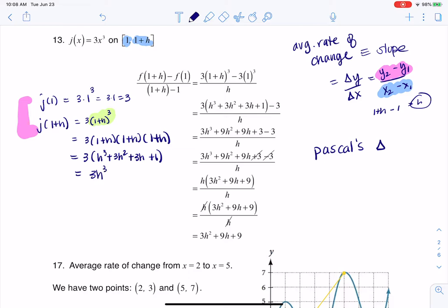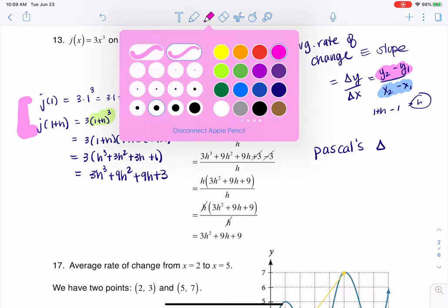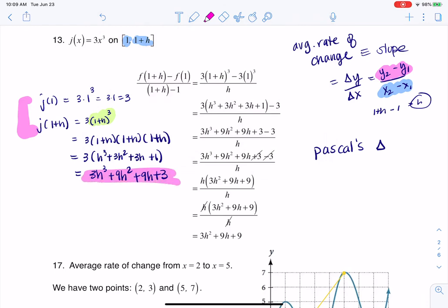And then I'm going to distribute the 3, so I'm going to get 3h cubed plus 9h squared plus 9h plus 3. And ultimately, keep in mind, I want to subtract these y values, so I want to take this y value and I want to subtract from it that y value, and those two things are going to go into the numerator of my slope.